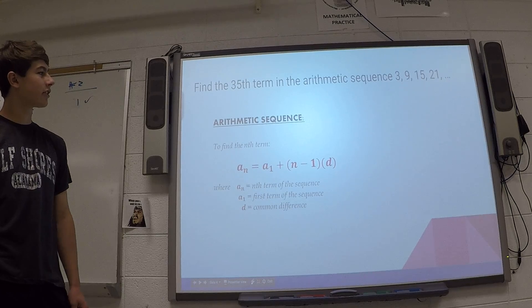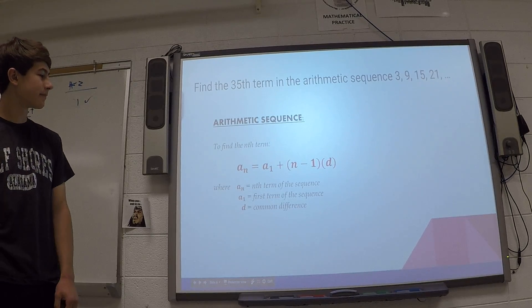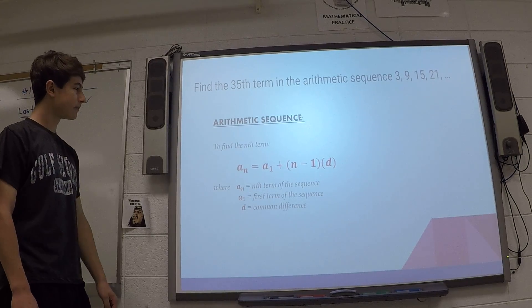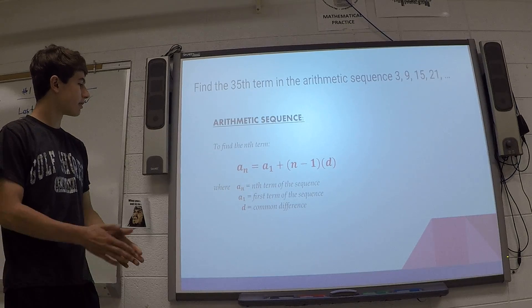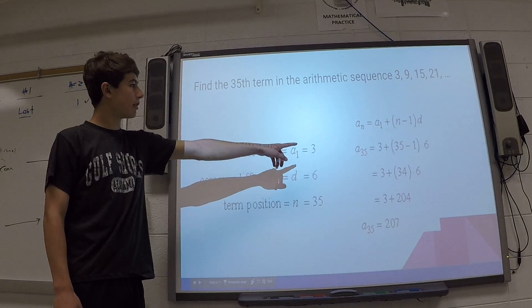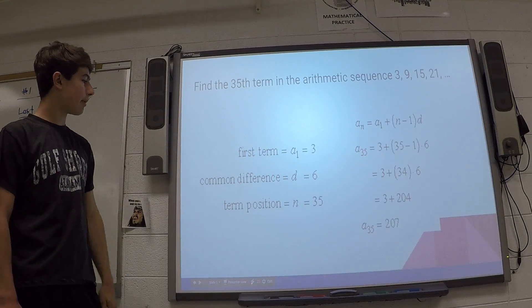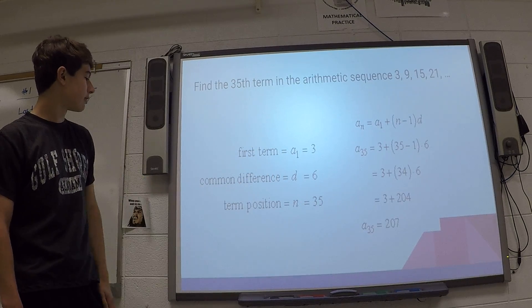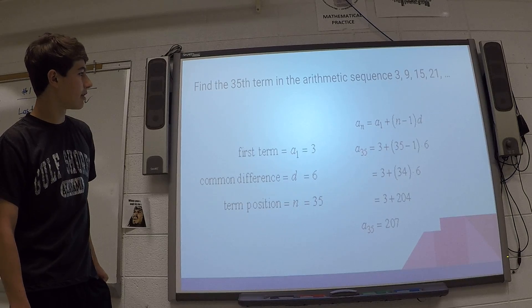So find the 35th term in the arithmetic sequence. You plug in your numbers. Your a1 would be 3, because it's your first number, your common difference would be 6, and your term position would be 35.